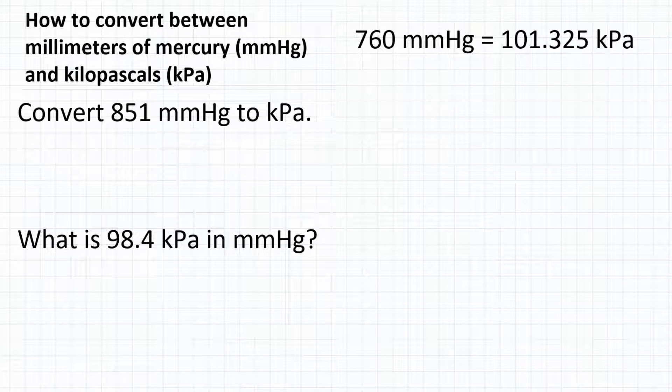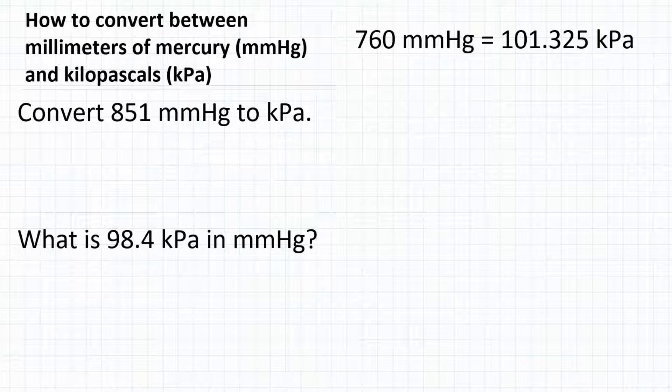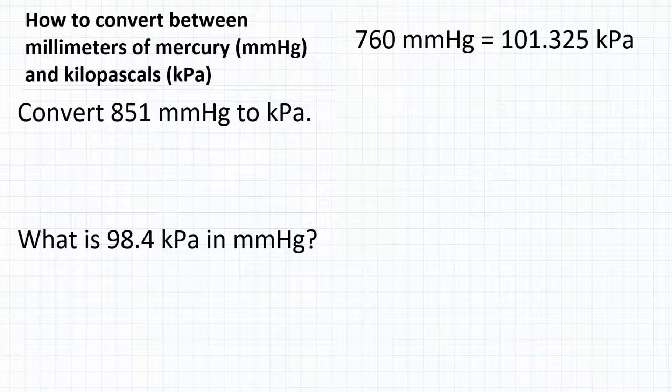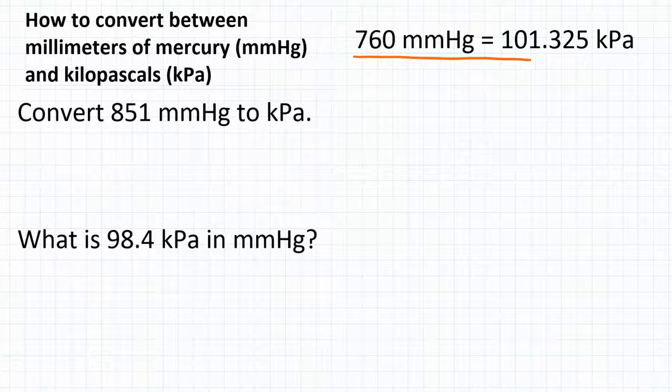How do we convert between millimeters of mercury and kilopascals? Millimeters of mercury and kilopascals are two different units of pressure. To convert between those two units, you need to know the relationship between them. In the top right corner, we see that 760 millimeters of mercury is equal to 101.325 kPa, which is kilopascals. That's the relationship we're going to need.